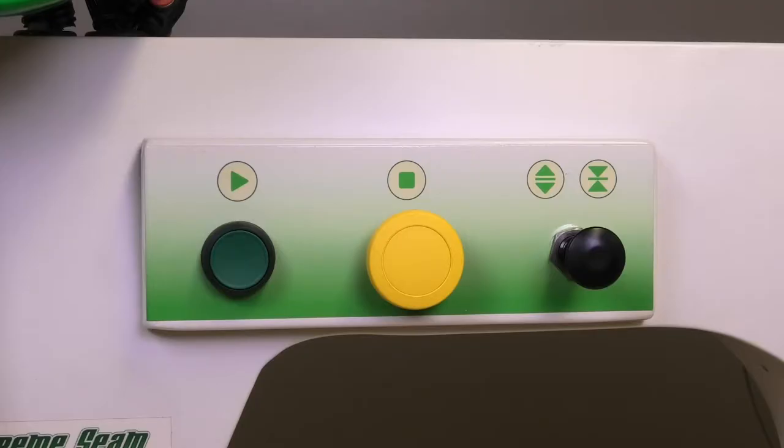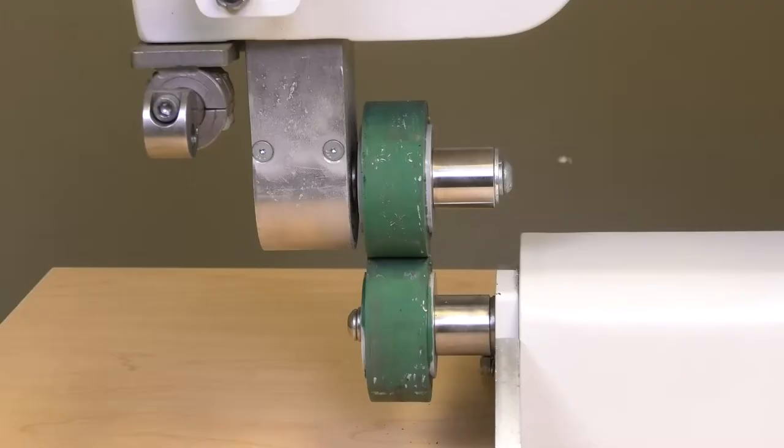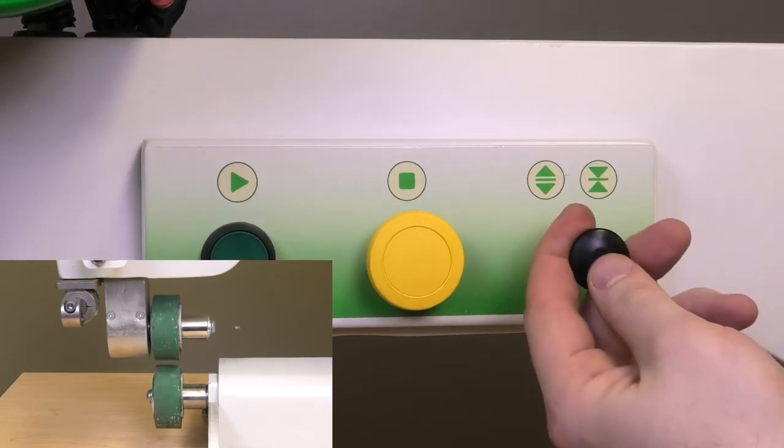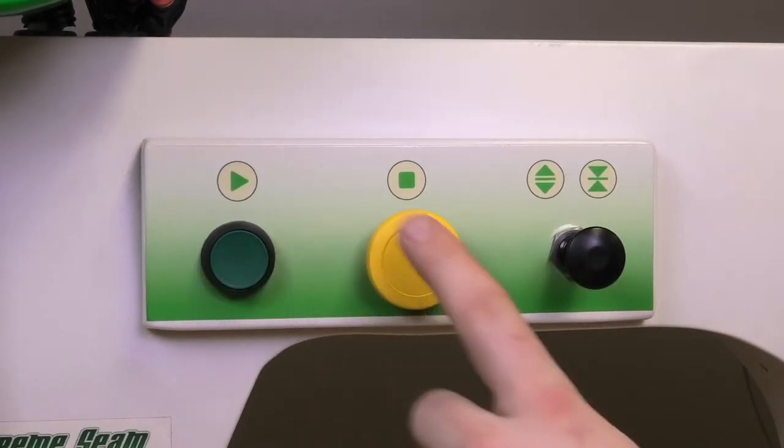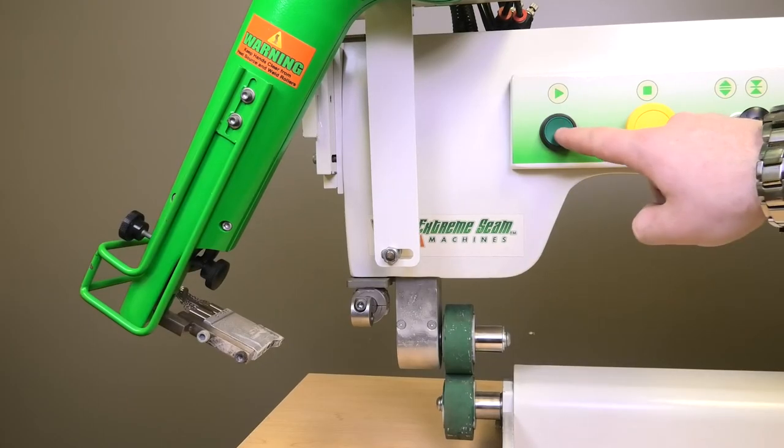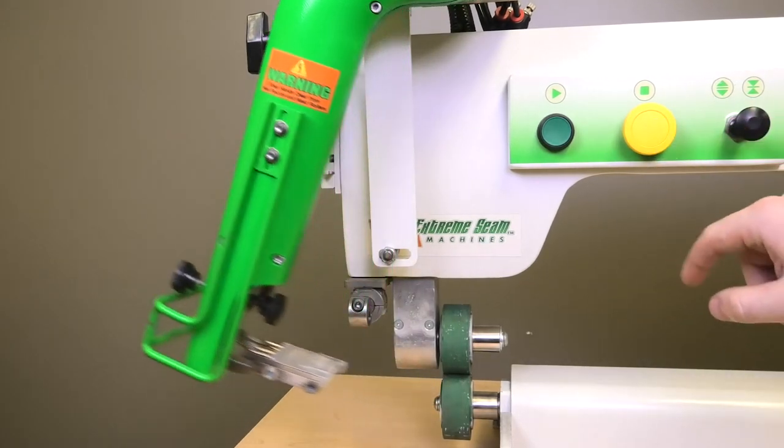So now we are going to go over the last three buttons on the machine. We have our up and down for the weld roller pressure. As you can see, the pressure regulates when you go up and down. We also have a start and stop button. This is if you don't want to use the foot pedal. You can align your material, click play, have the wedge swing in, and once you're done, hit stop.